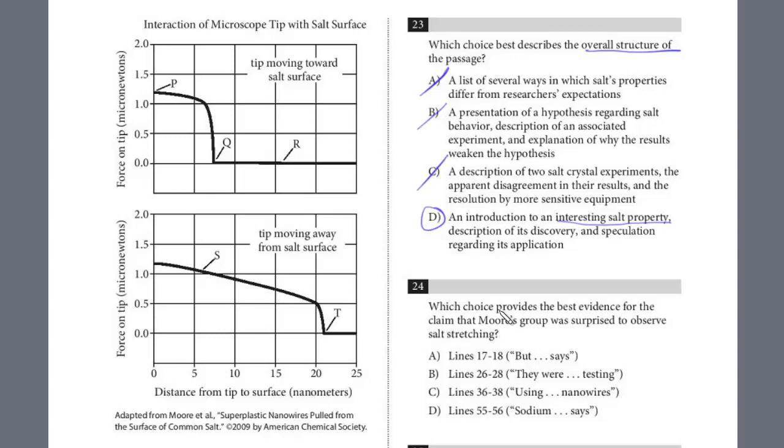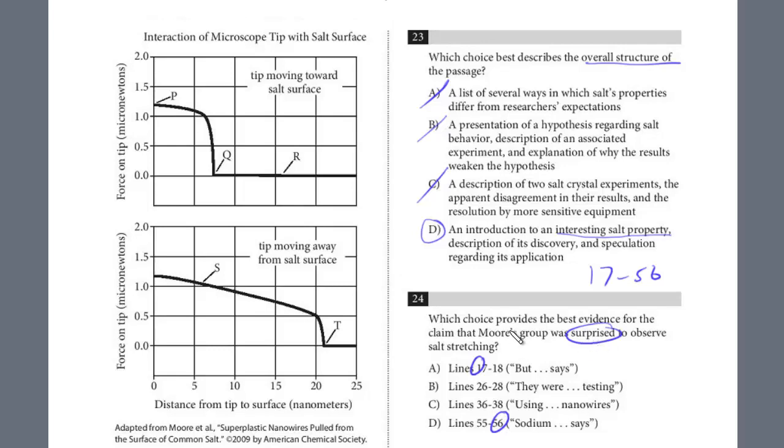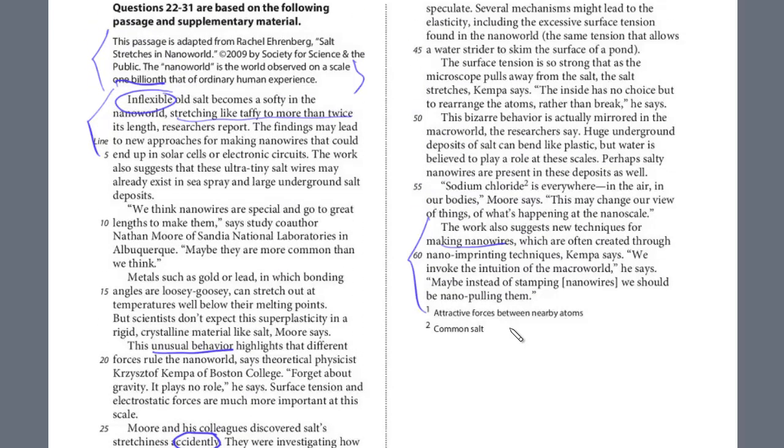Let's take a look at number 24. Which choice provides the best evidence for the claim that Moore's group was surprised to observe salt stretching? We know it's between the beginning of the range and the end. It's between lines 17 and 56. So we're just going to scan through. We're looking for some evidence that Moore's group was surprised. We'll start at line 17.